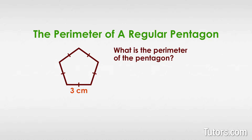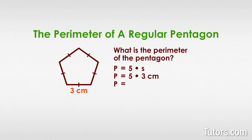We start with our formula p equals five times s. Then we plug in our known side of three centimeters, so we have p equals five times three. And we get p equals fifteen. The perimeter of the pentagon is fifteen centimeters.